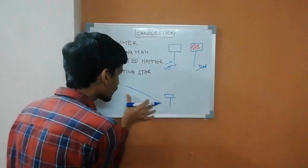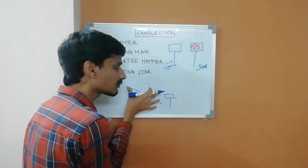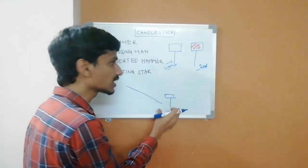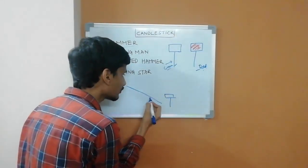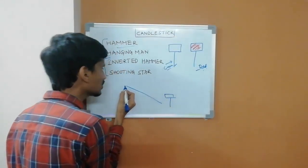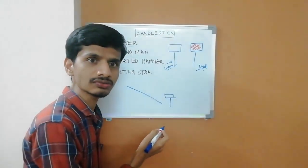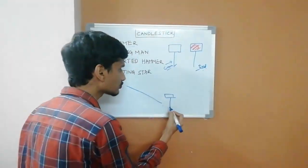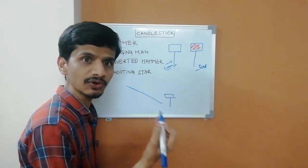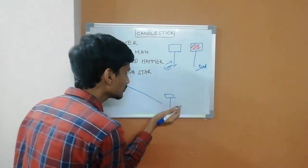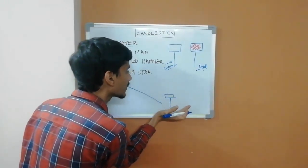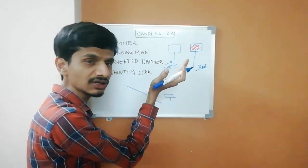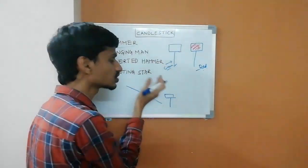A bullish candle forms here. It is at a very low price. It's a bullish direction. The seller's market is dominant, but the seller's strength is getting lower. The buyer's strength is higher than the sellers. If buyers want to push the price, they can push the price up.